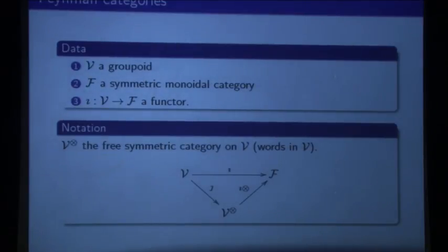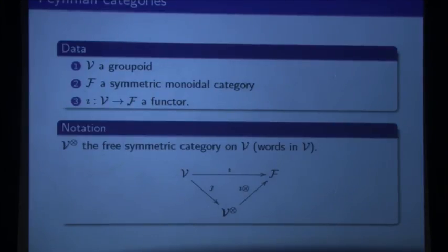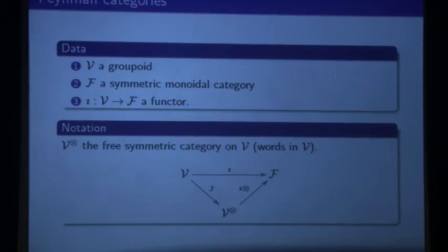So we can just get down to the definition. If I'm in category — and this is maybe why it took three years — I got it down to three pieces of data and three axioms. There used to be more. The three pieces of data are: I take a groupoid V, which is going to be the symmetries of the theory. Then I take a symmetric monoidal category F — that's the meat part. And of course I have to relate them, so there's a functor from V to F. If you're a purist, I could say it's one piece of data — a functor.